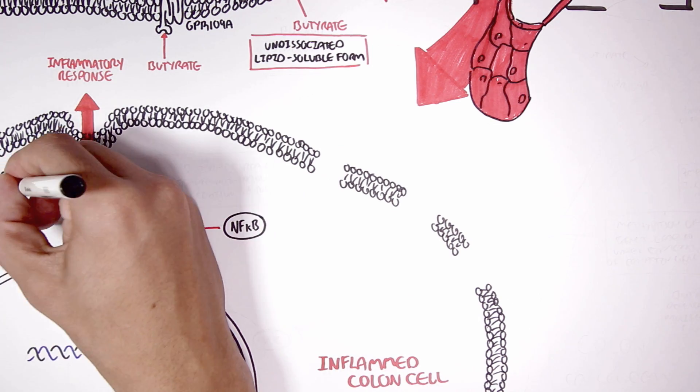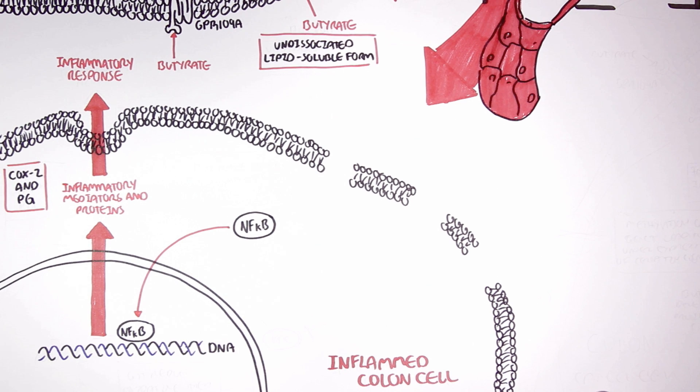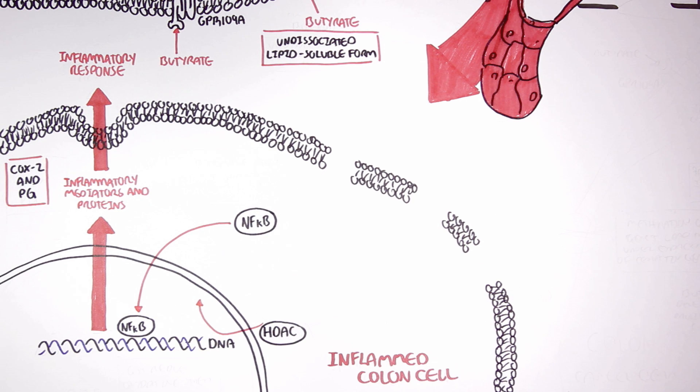Examples of these proteins and enzymes produced are COX2 and prostaglandins. In an inflamed colon cell, HDAC may also be suppressing important genes that normally maintain colon cell function and health.